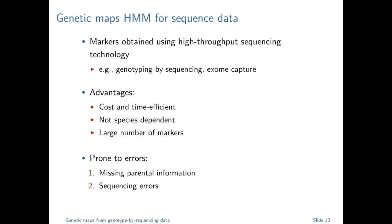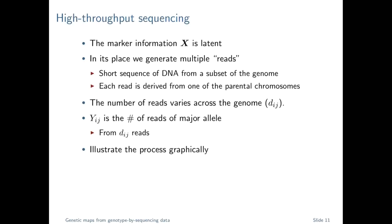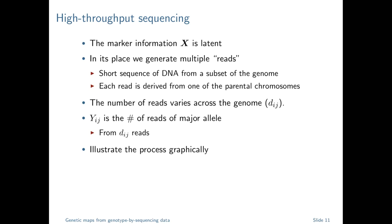While we can get information on a large number of markers cheaply and quickly, these technologies are prone to more errors. We focused on two we thought were the biggest: first, missing parental information; second, sequencing error. With high-throughput sequencing data, those genotypes are also latent — we don't get to see the genotypes. What we see instead are things called reads.